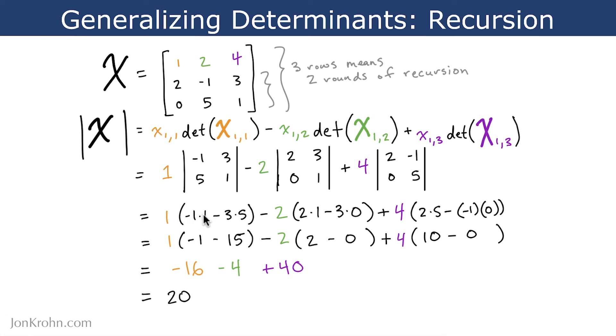Simplifying a bit here, so negative 1 times 1 is negative 1. Negative 3 times 5 is negative 15. 2 times 1 is 2. 3 times 0 is 0. 2 times 5 is 10. And negative 1 times 0 is 0.